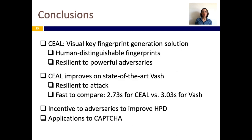In conclusion, we presented SEAL, a visual key fingerprint generation solution — the first that generates key fingerprints designed to be human distinguishable, even in the presence of powerful adversaries. SEAL improves on the state-of-the-art visual key fingerprint generation solution VASH: it is more resilient to attacks and it generates images that are still fast to compare by humans. Our research further provides incentives to build better human perception discriminators to improve attack accuracy, which in turn has applications to CAPTCHAs where users are shown pairs of images known to be difficult to compare by HPD. Thanks for your attention and please contact us if you have any questions.